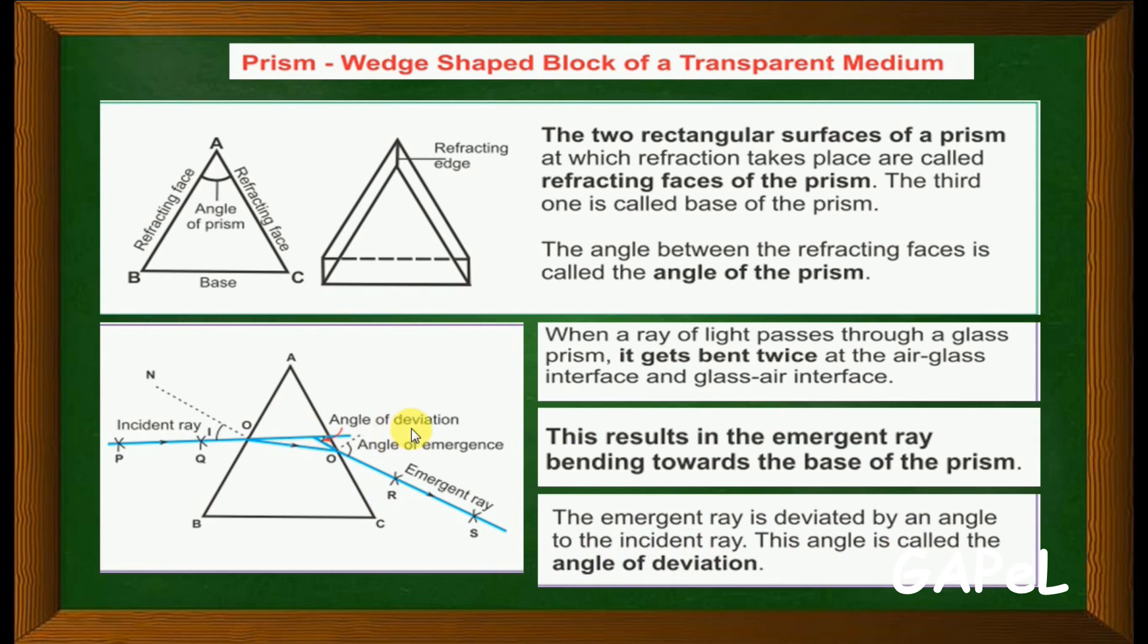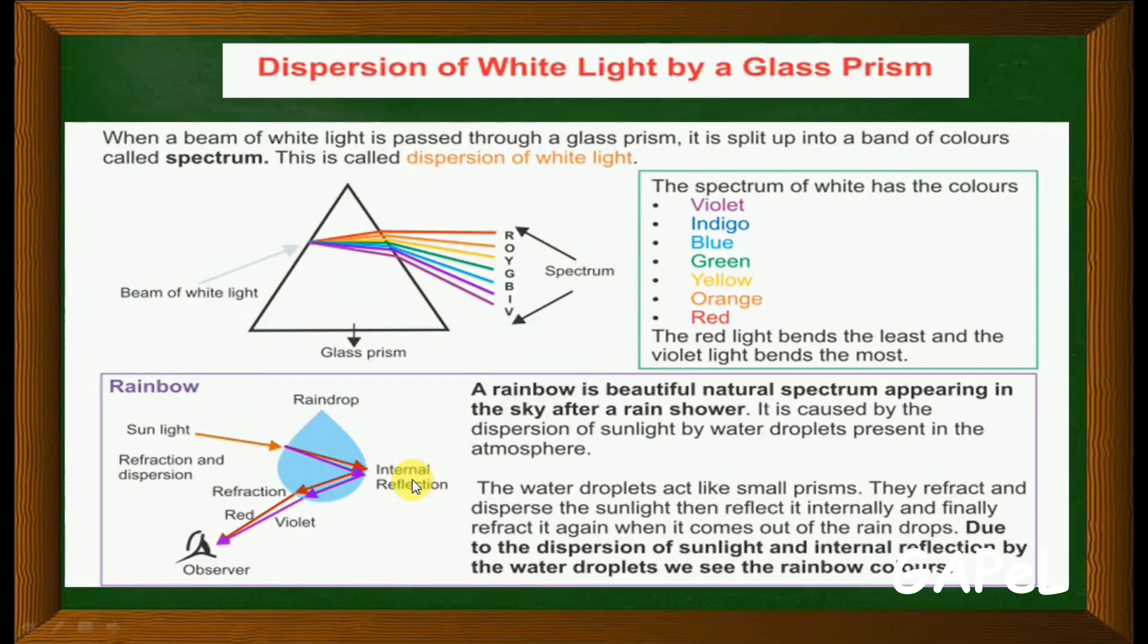That intersecting point will give you the angle of deviation. From this part, I would say that hardly few questions will be asked - either to draw the diagram of this prism and mark the incident ray, emergent ray and all points properly. And the second question will be based on rainbow or dispersion.